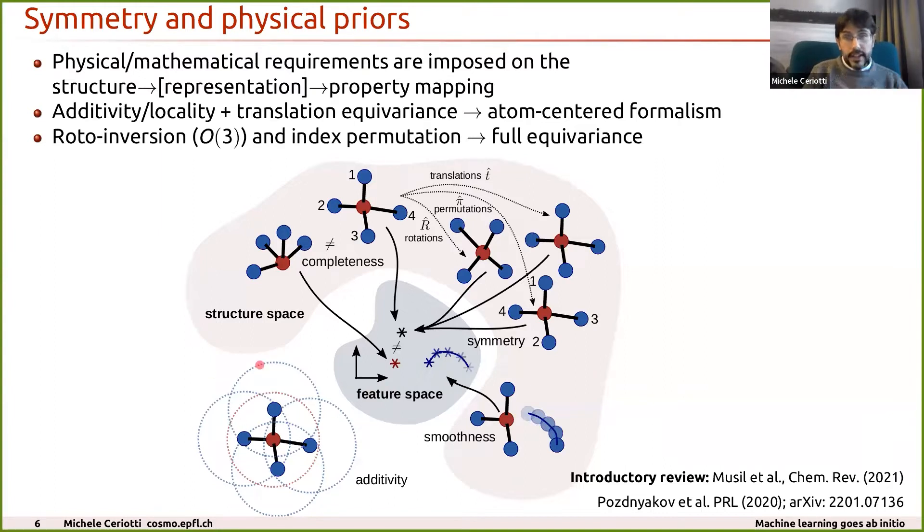Another requirement, which is less obvious but really important to achieve models that are transferable and efficient, is to be able to express a macroscopic property, say the energy or the polarizability of the entire system, as a sum of contributions that are associated with each individual atom. This locality is basically what allows you to train your model on relatively simple systems, and then being able to put the pieces back together and make a prediction for something much larger and on a global scale much more complicated.